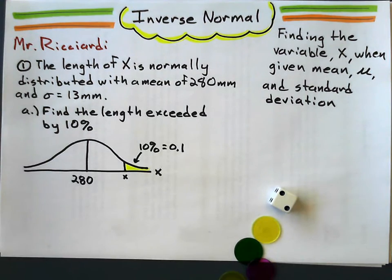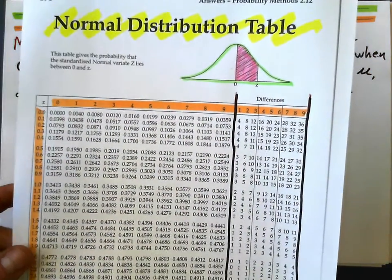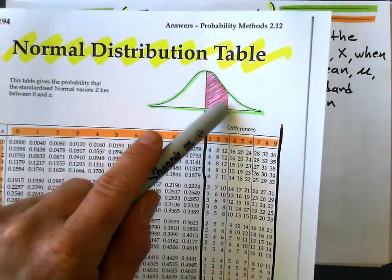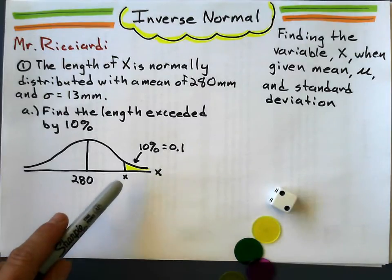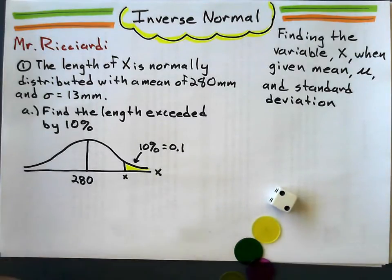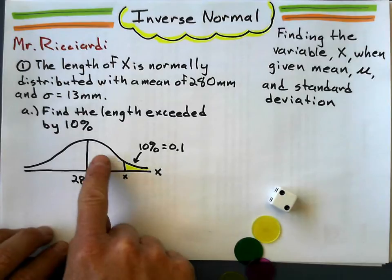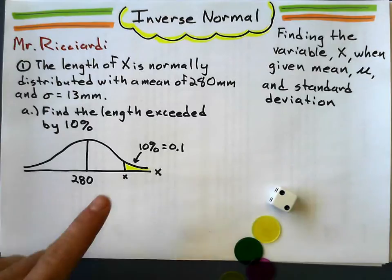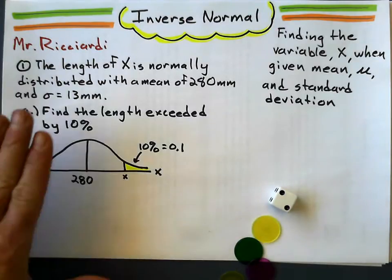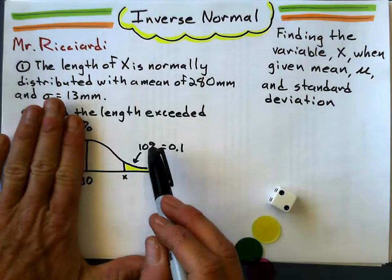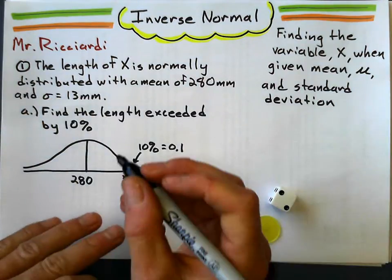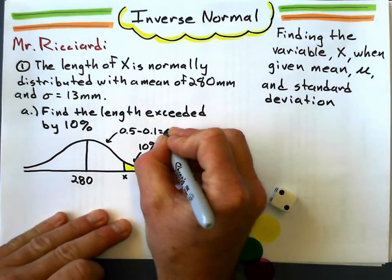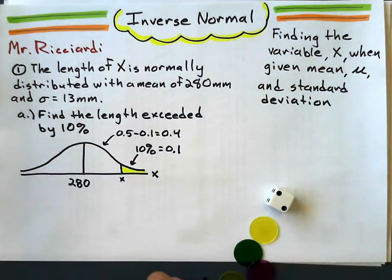Now, we're doing this without a graphics calculator, we're doing this with a good old-fashioned z-table here. Reminder, the probability in the z-table are the ones attached to the mean, no tail-end Charlie's. So when we look up the probability here, we're actually looking up this bit here because that's the part that's attached to the mean. So that's half, so 0.5 minus 0.1, 0.5 minus 0.1 is going to give us, of course, 0.4.